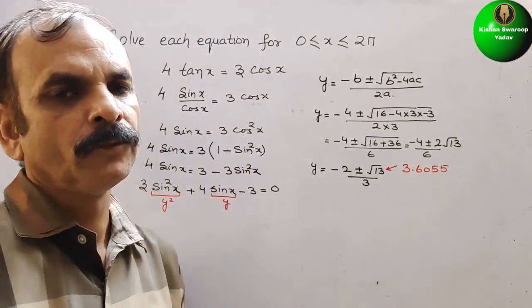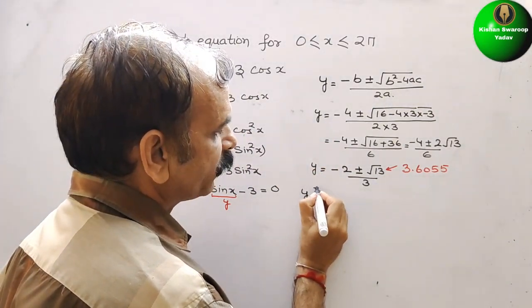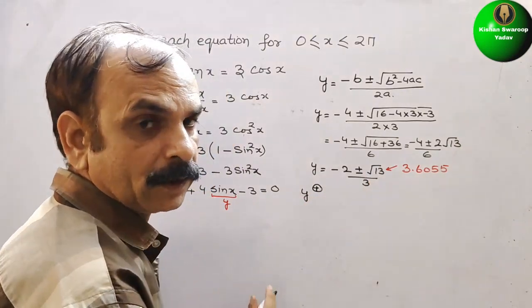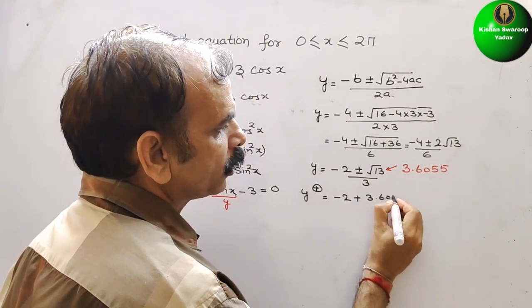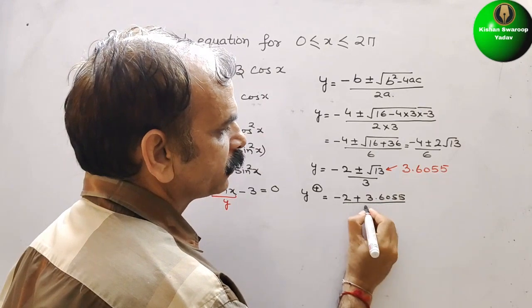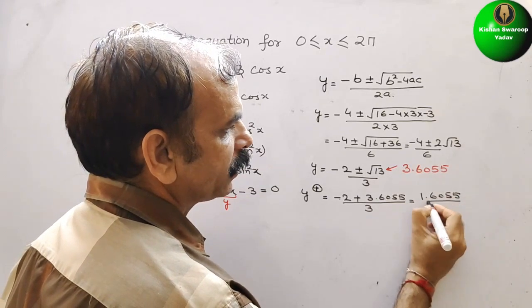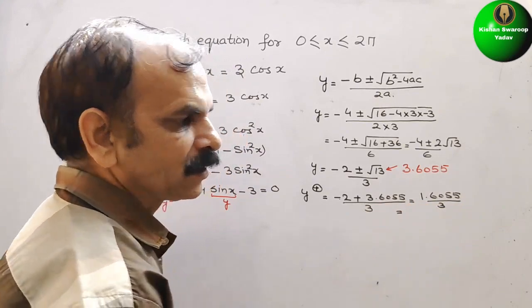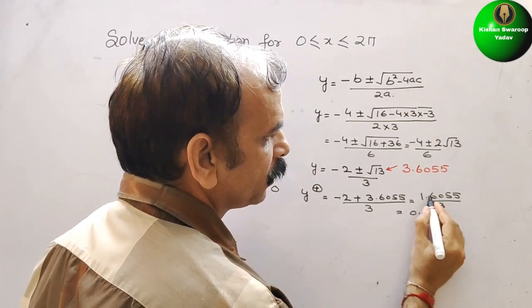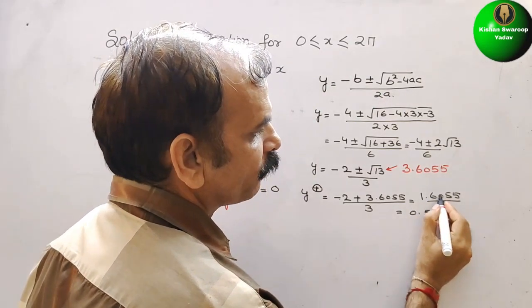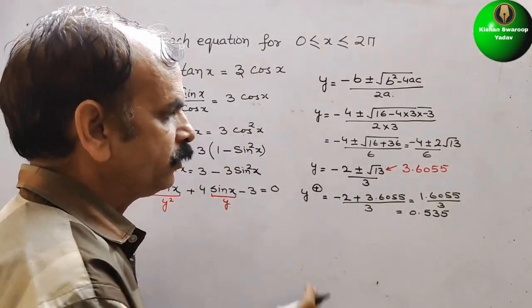Just substitute this value. If you take the positive root, y = (−2 + 3.6055) / 3 = 1.6055 / 3 ≈ 0.5352. So we will take 0.535 as one value of y.